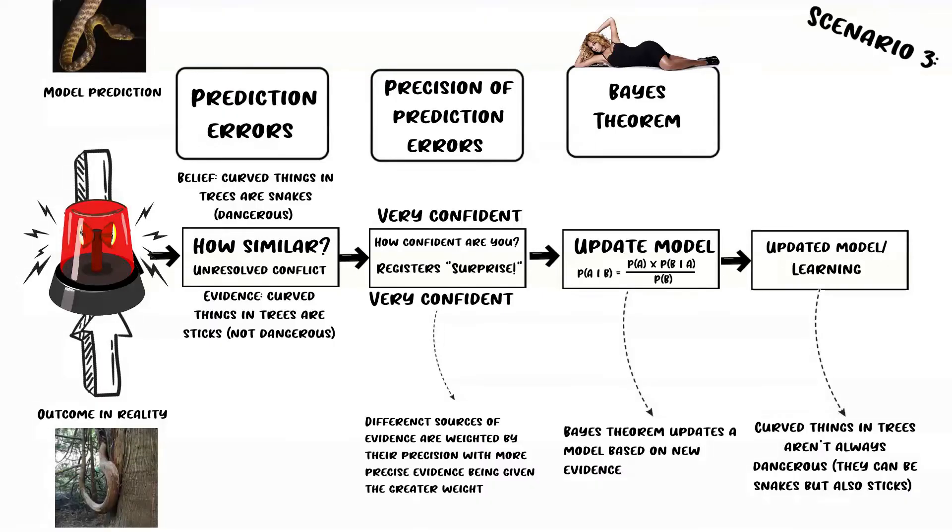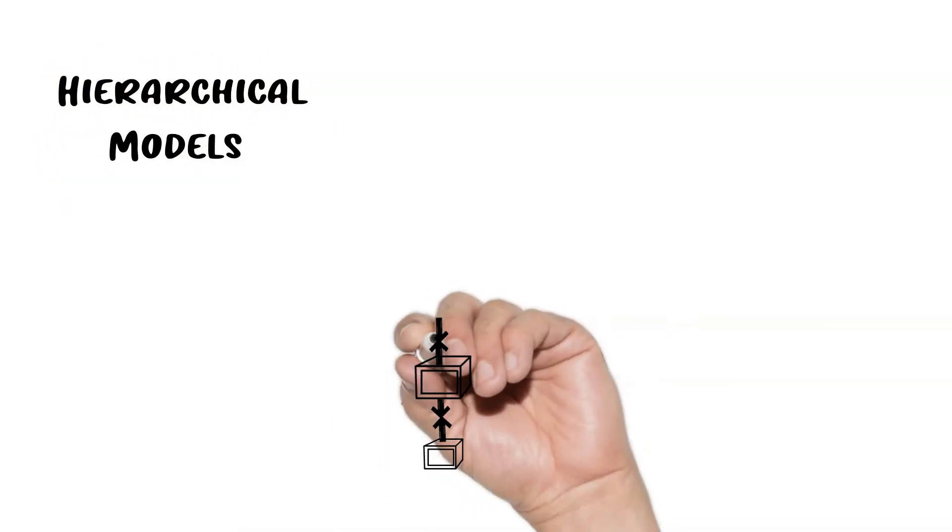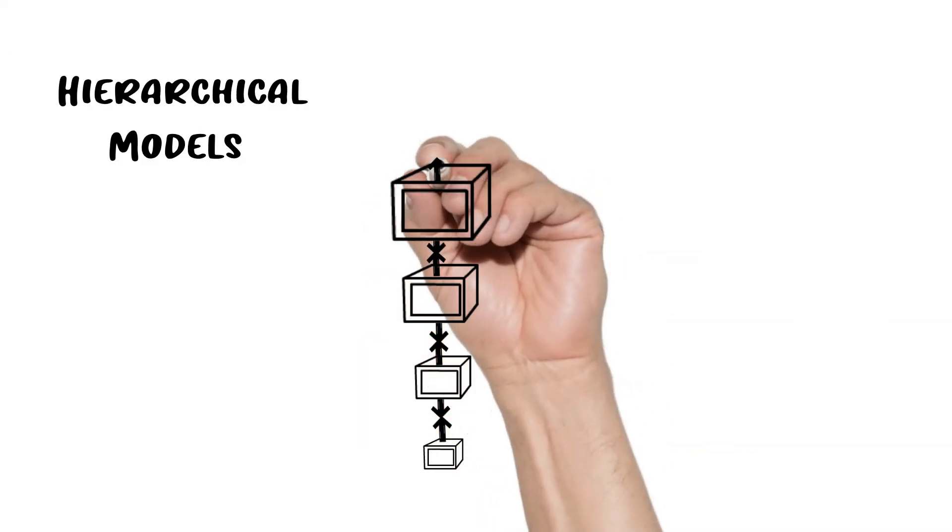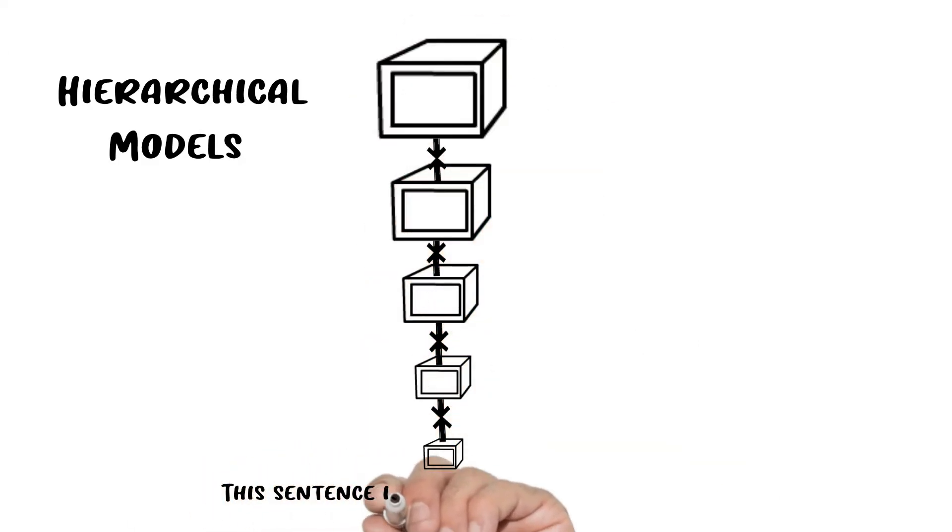My last example was of course a simplified example of how this occurs in our brain. The main thing I left out is that this occurs in a hierarchical fashion. To understand what I mean by this occurs in a hierarchical fashion, consider the steps it takes to even understand reading a sentence.